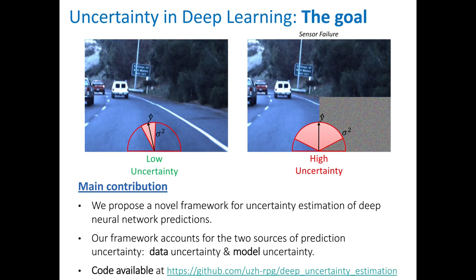To detect and avoid this wrong prediction, we propose a general framework for uncertainty estimation of deep neural networks. Our framework can model the uncertainty in neural networks coming from two sources: data uncertainty and model uncertainty. The data uncertainty usually describes the uncertainty coming from the sensor noise, while the model uncertainty describes how much a neural network is uncertain about its own prediction.